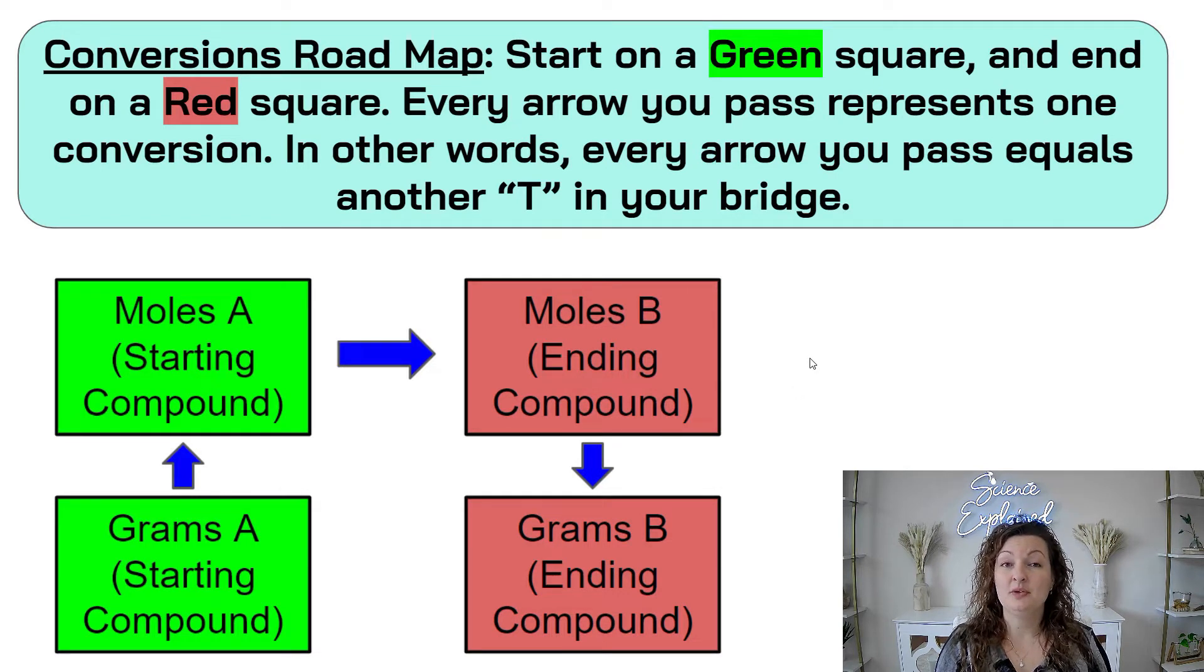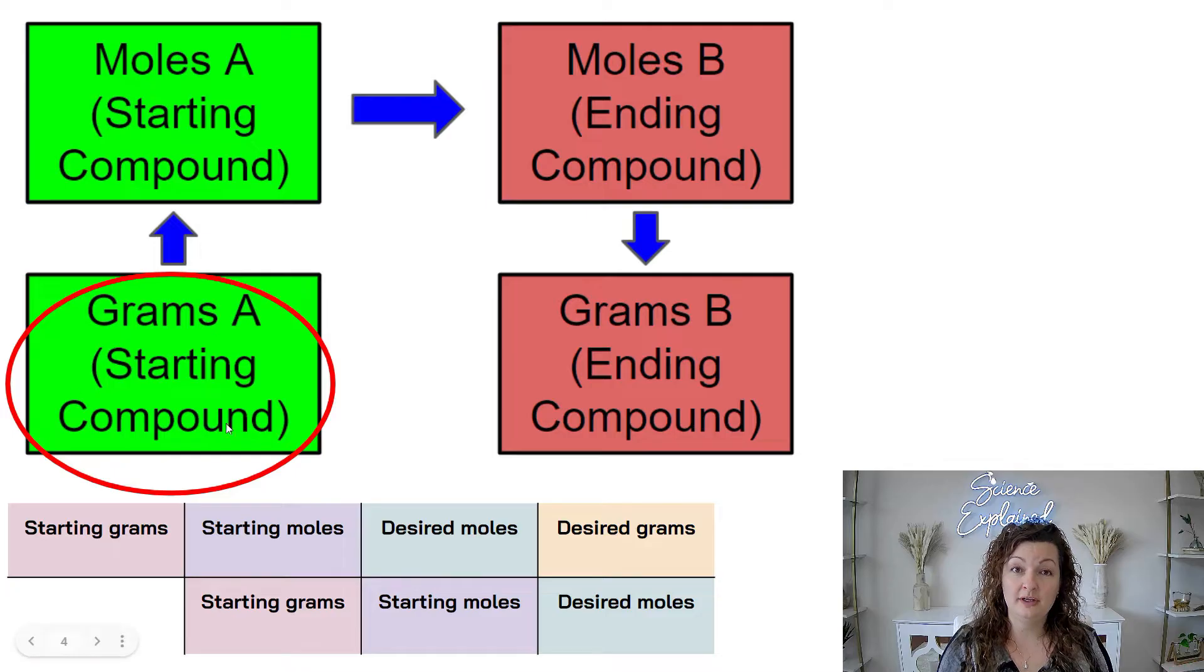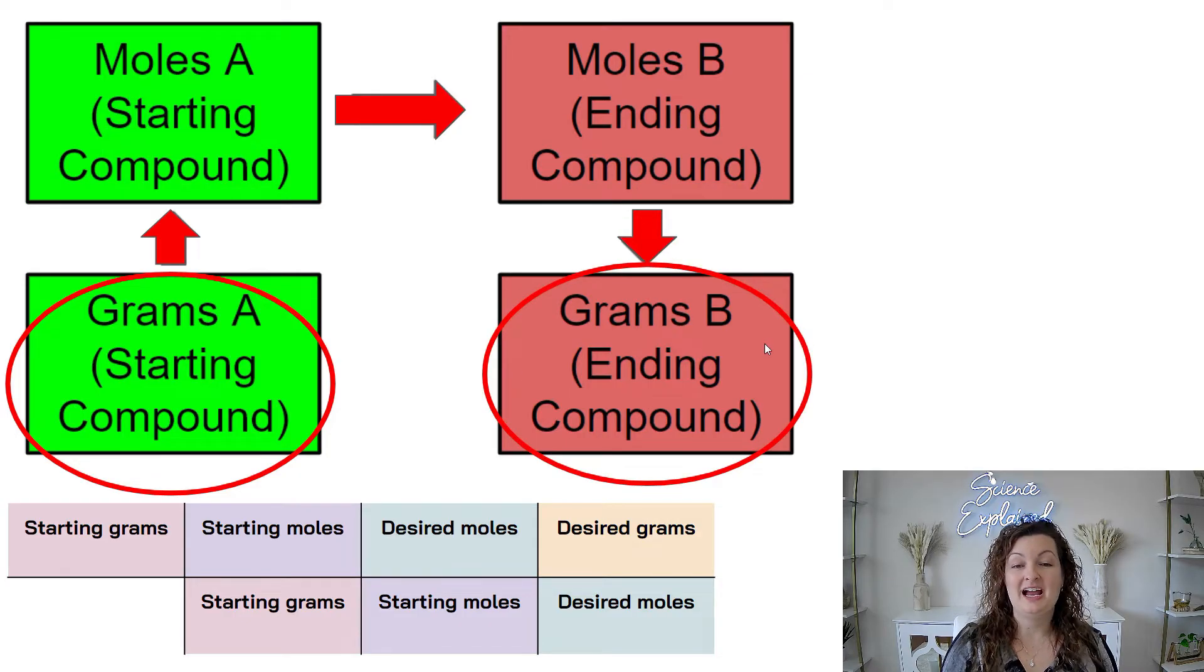So remember your roadmap. You always want to start on a green square and you want to end up on a red square. Today we're going to be starting with grams of one either compound or element, whatever they give you. We're going to be transferring that into moles of the same compound or element, and then we're going to transfer it to moles of a different whichever ending compound or element that we want.